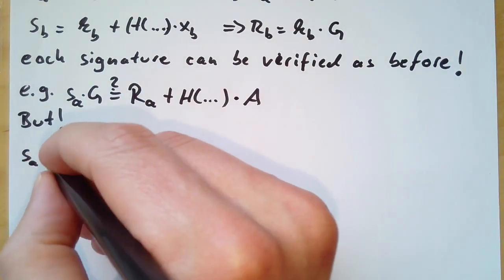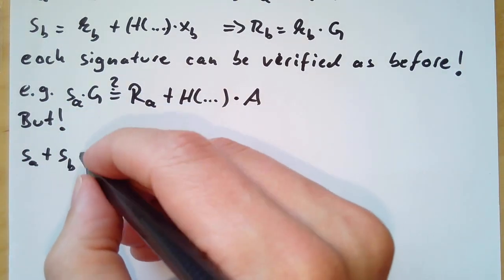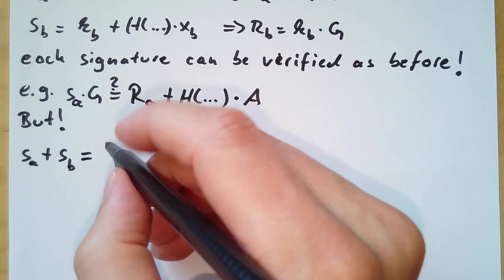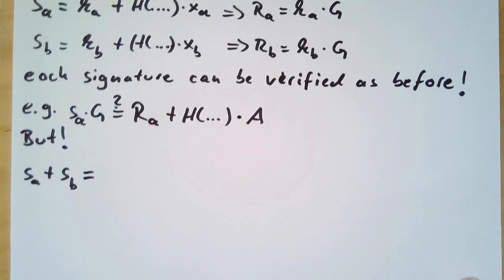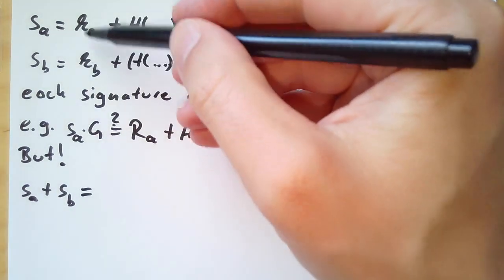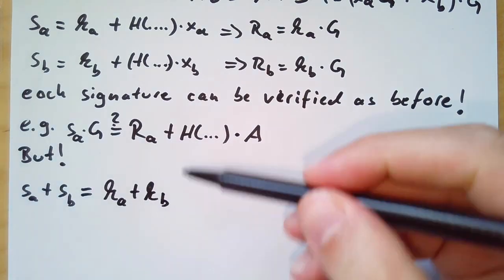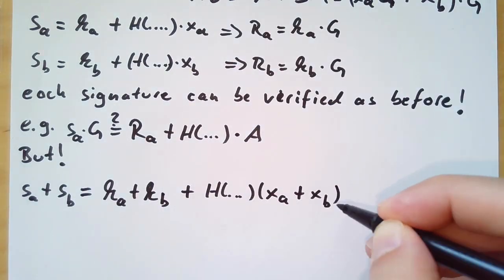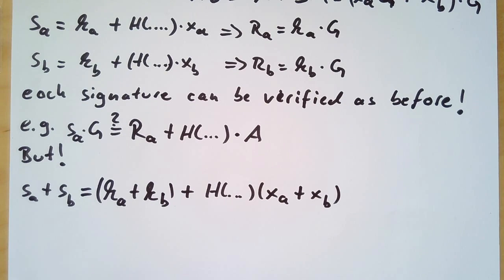But what happens if we now add the two partial signatures? I call them partial because sa was the signature for key A and sb was the signature for B. As we can see, we just have to add the random nonces and then add the private keys.